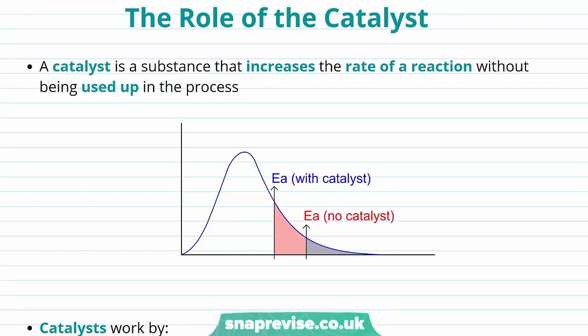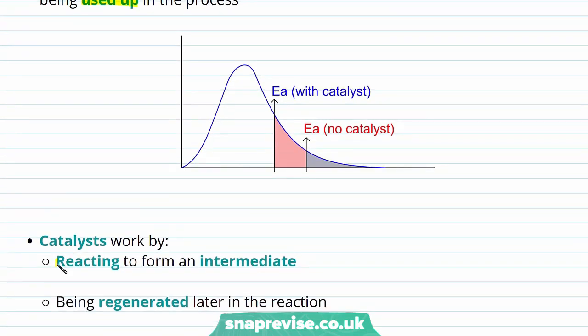A catalyst is a substance that increases the rate of reaction without being used up in the process. Catalysts usually work by reacting to form an intermediate and then being regenerated later in the reaction. Here we have a reaction profile diagram showing the activation energy with and without a catalyst.